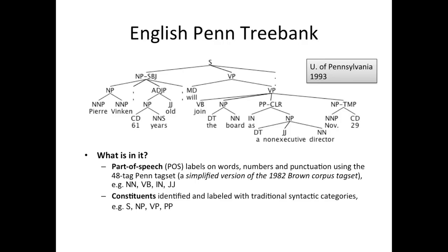Then you have to identify constituents, which is a very big problem. If you're a syntactician, you may not agree with the syntactic analysis given. What the Penn Treebank did was try to come up with a fairly simple analysis based on traditional grammar tags that most people could agree on. Most importantly, those tags should be usable by annotators — the annotators should be clear what we mean by verb phrase, noun phrase, sentence, and so on.